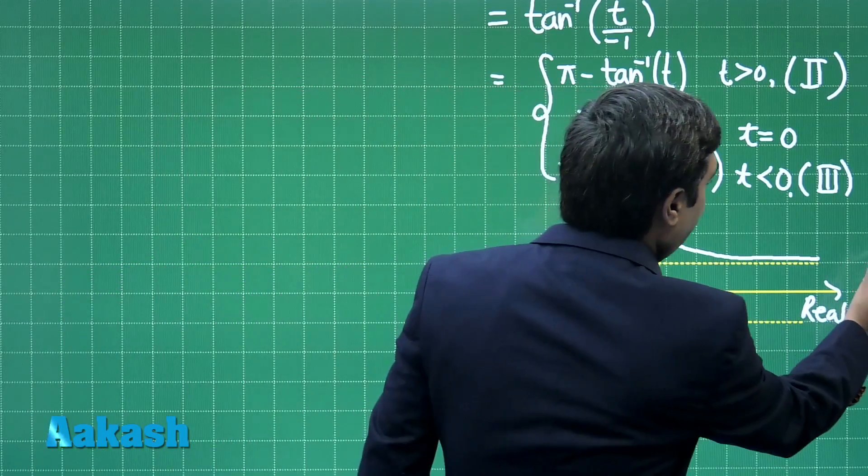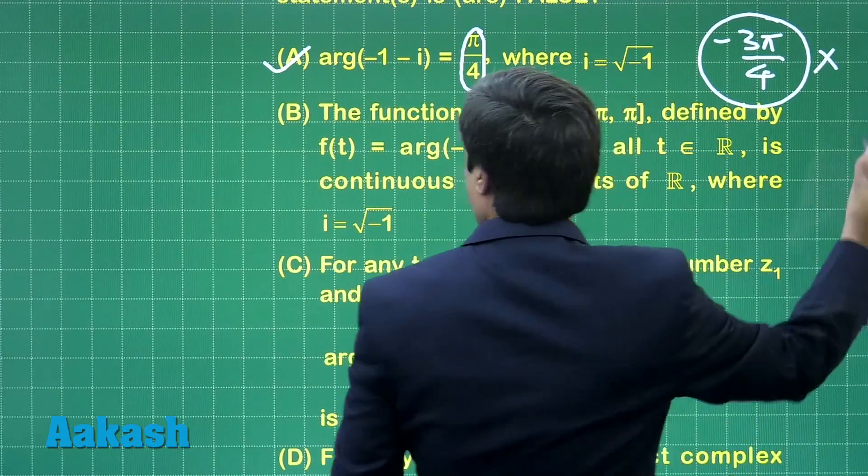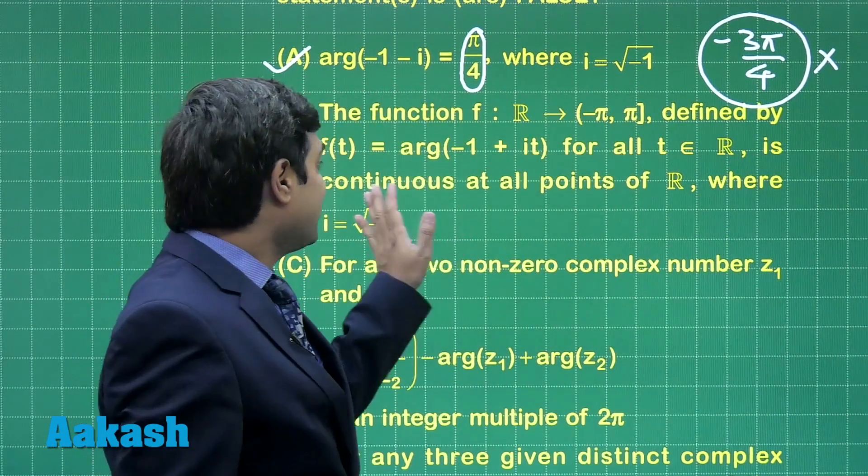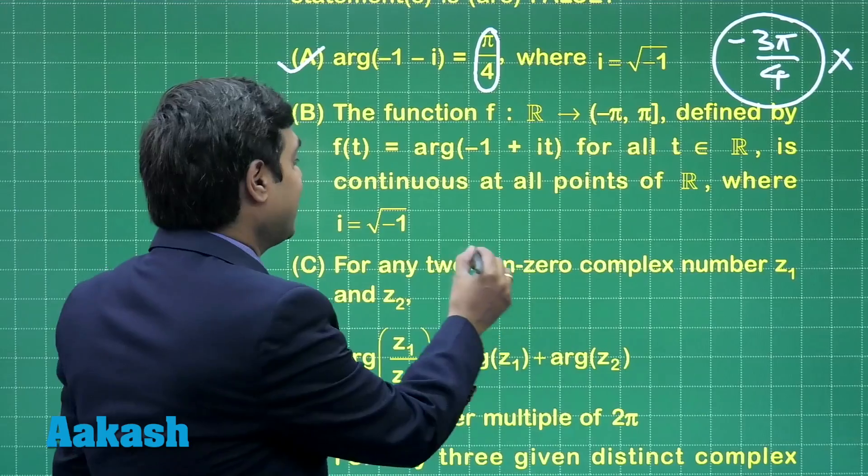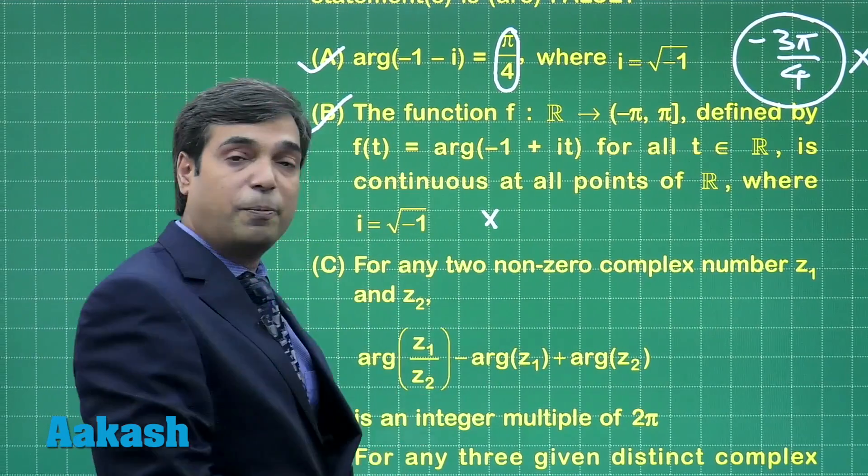Clearly we see here the graph is discontinuous. Moving back to the given options, option B says this is continuous, meaning this is false. This is one of our options.